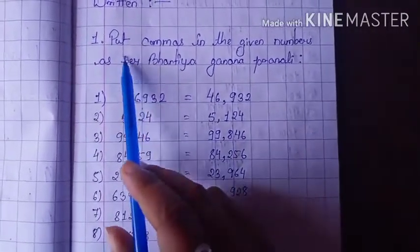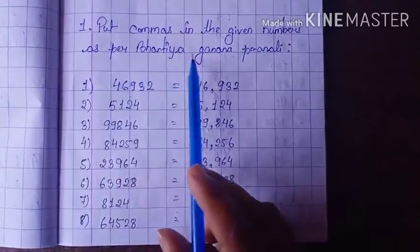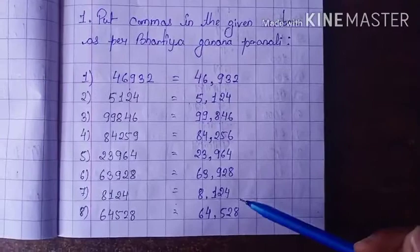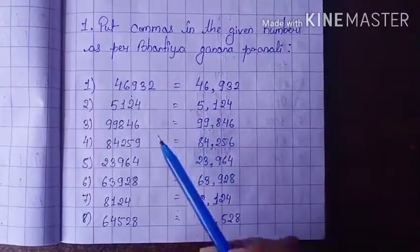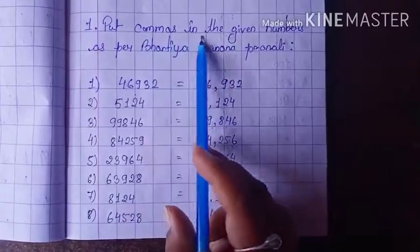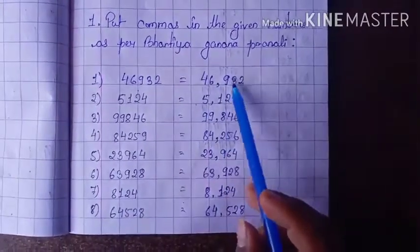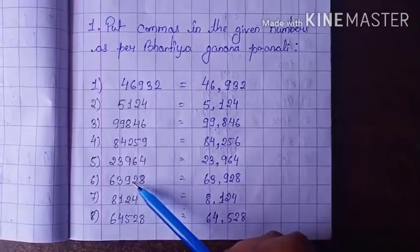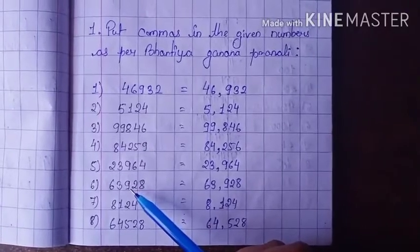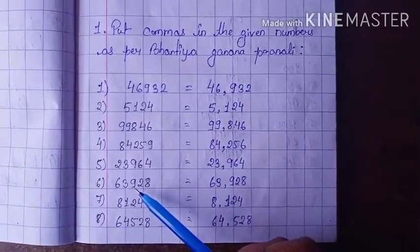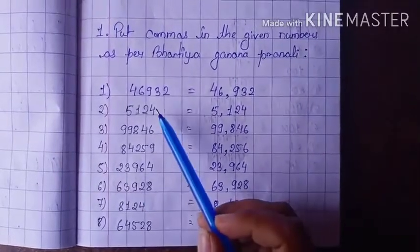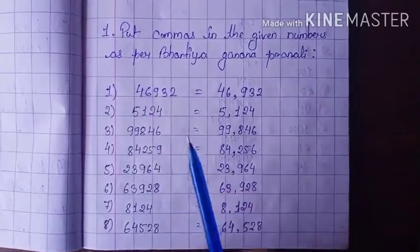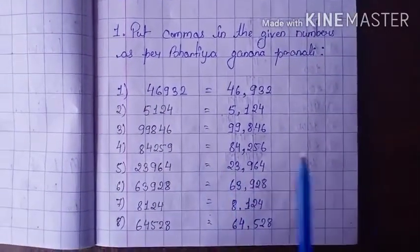Question number 1: Put comma in the given numbers as per Bharatiya Grana Pranali. In this question, we only put in commas according to the Bharatiya Grana Pranali. We know that in Bharatiya Grana Pranali, when we start putting commas, first of all we put a comma after 3 digits from the right, then after every 2 digits.